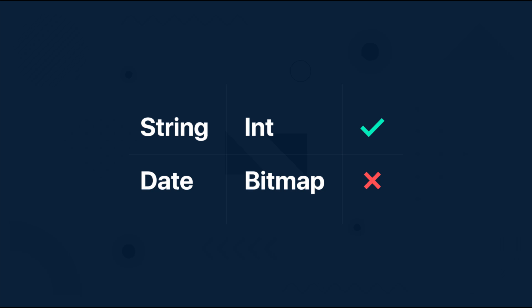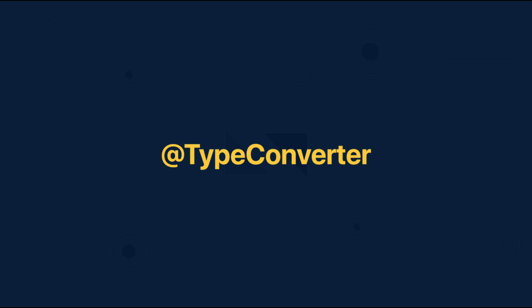For example, we can have String or Integer type fields, but not Bitmaps directly. And if you want to store some non-acceptable types in a Room database then you would need to use a type converter instead. And that will be a topic for another video tutorial.